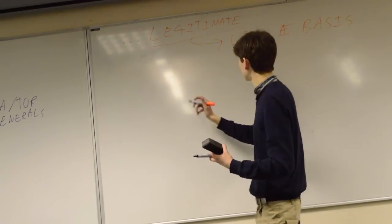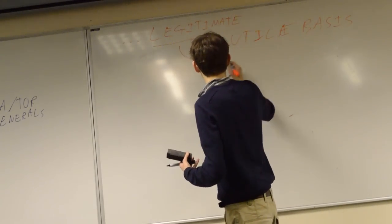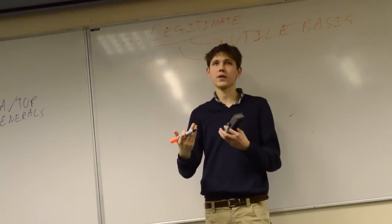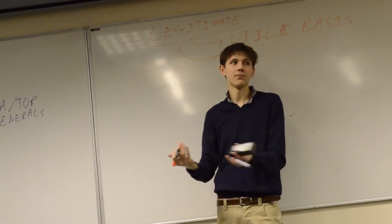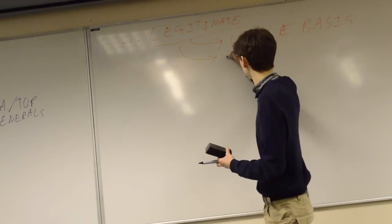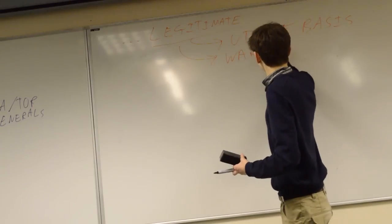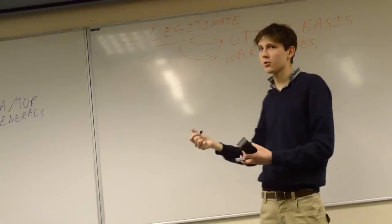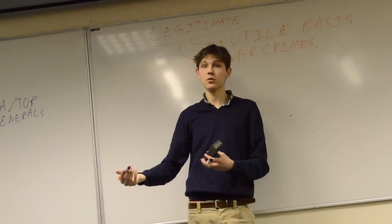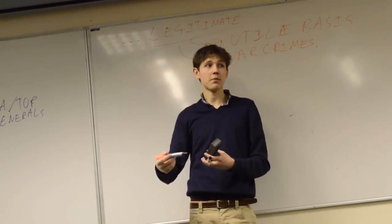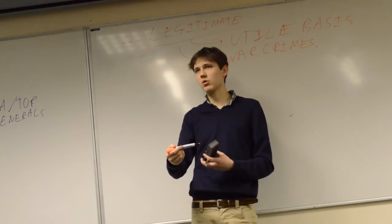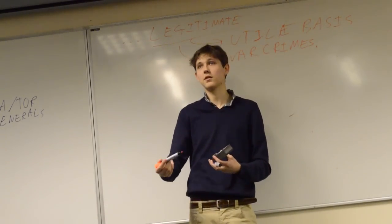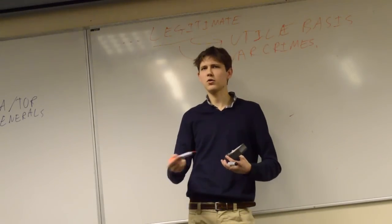But a second one we can talk about is we can talk about like have an international war crime theory or something and talk about like rules of war. That's another way of looking at what's legitimate. So war crimes. So there are some things that we just don't do. We never use sexual assault as a weapon of war, even in cases where it would be to a utilitarian positive end. We never use cluster bombs, even though they could be effective or whatever else.